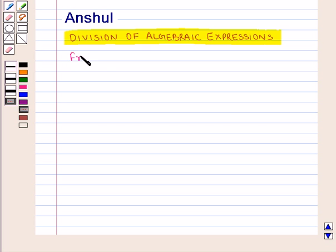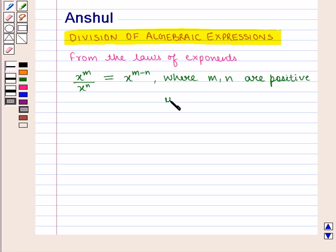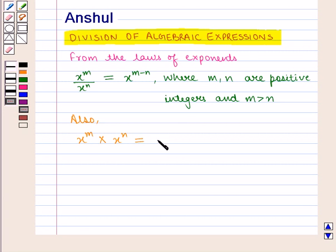From the laws of exponents we have: x raised to power m divided by x raised to power n is equal to x raised to power m minus n, where m and n are positive integers and m is greater than n. Also, x raised to power m multiplied by x raised to power n is equal to x raised to power m plus n, where m and n are positive integers.